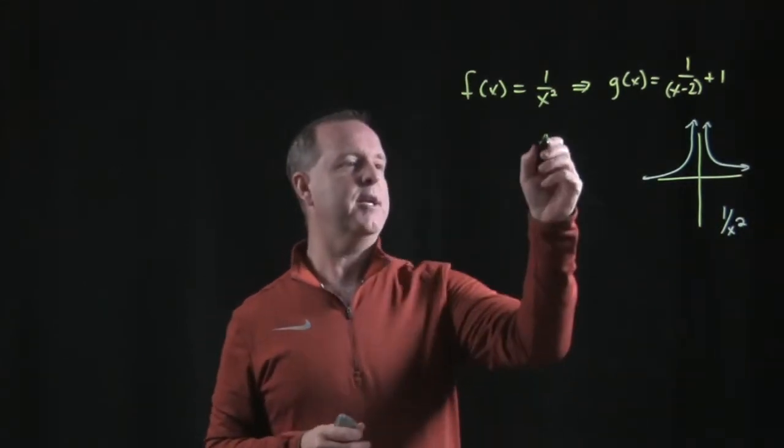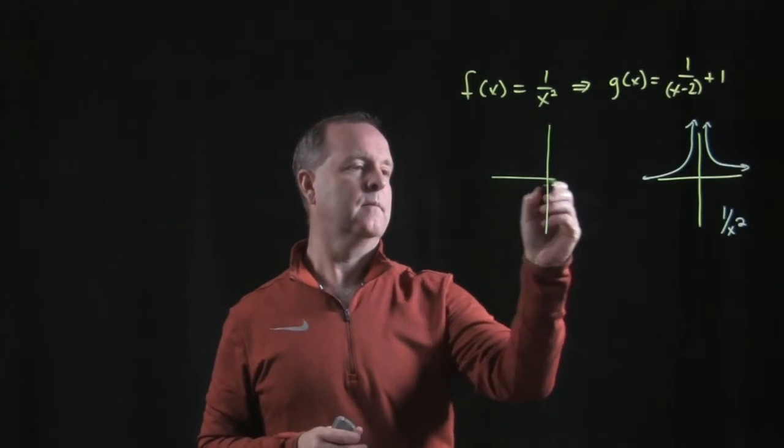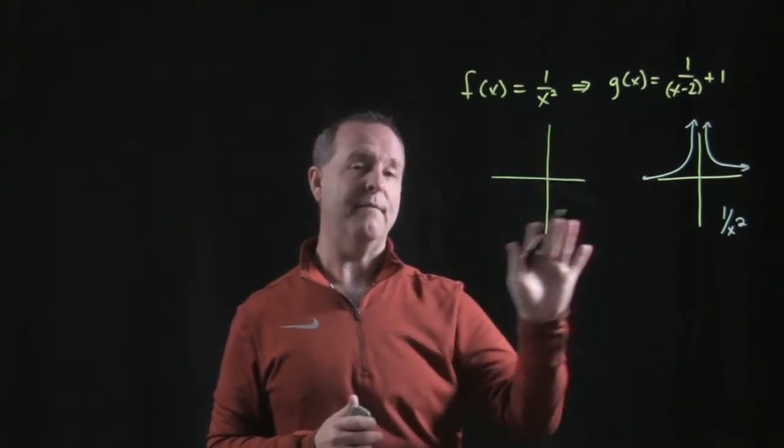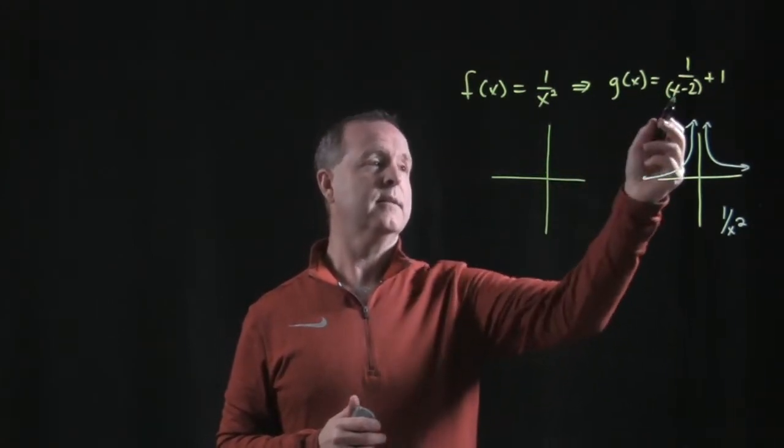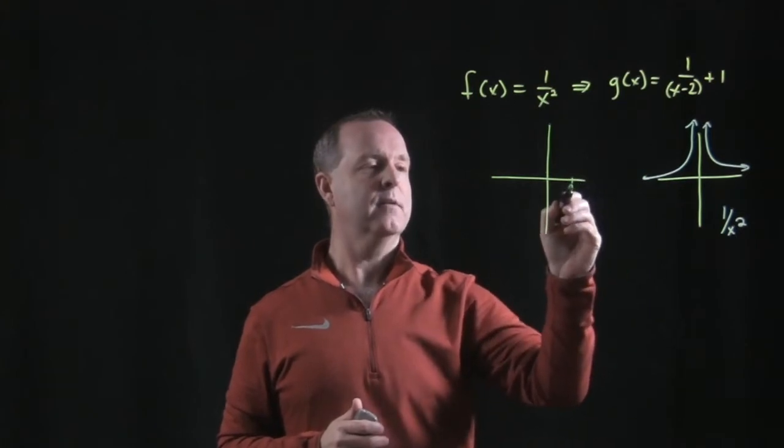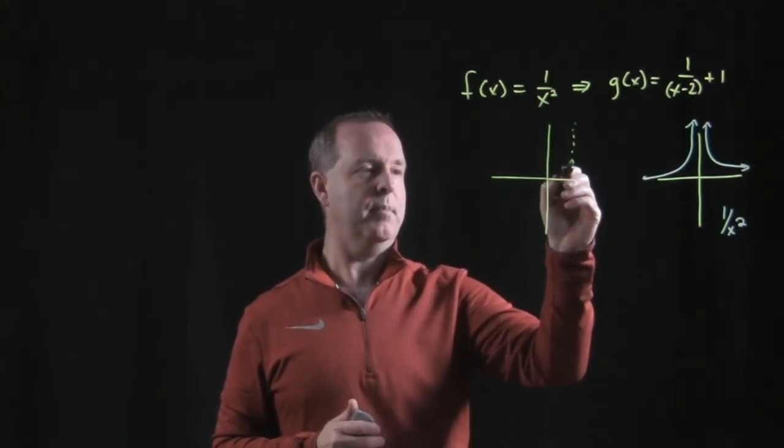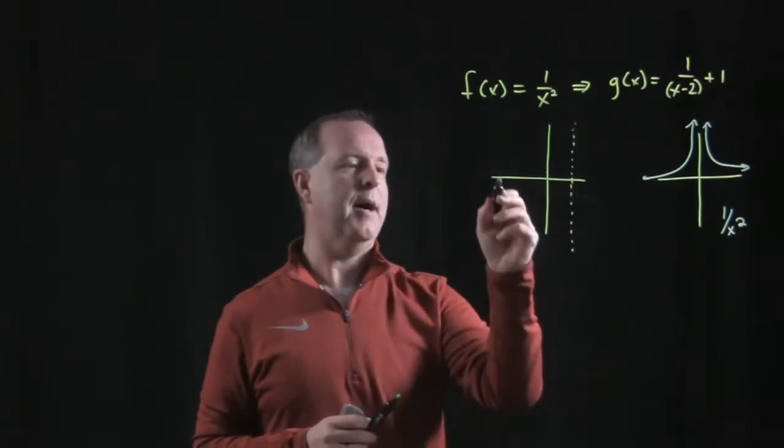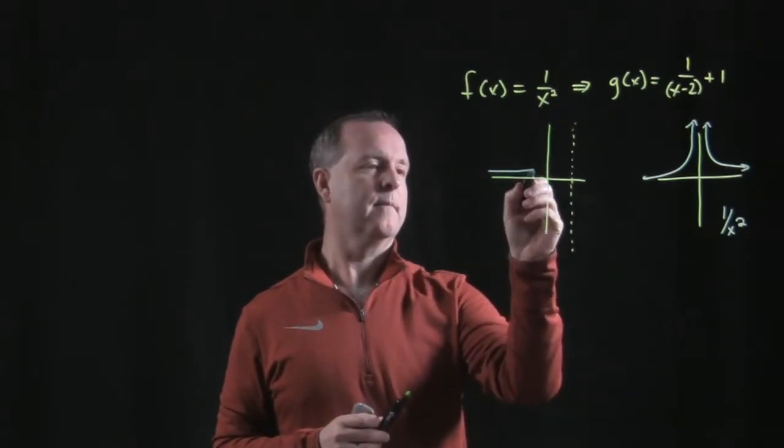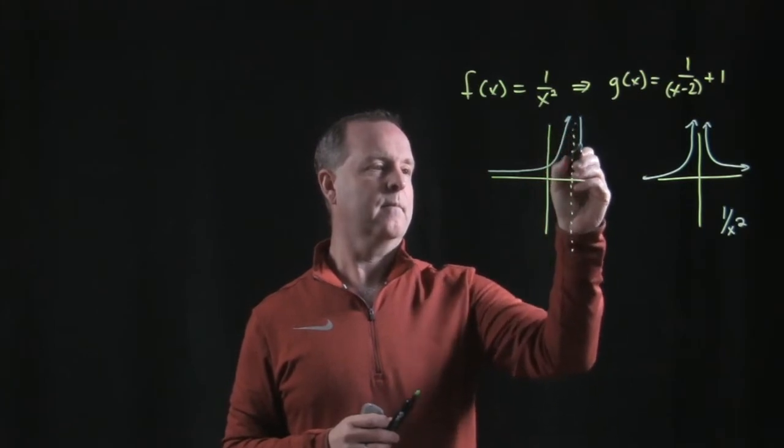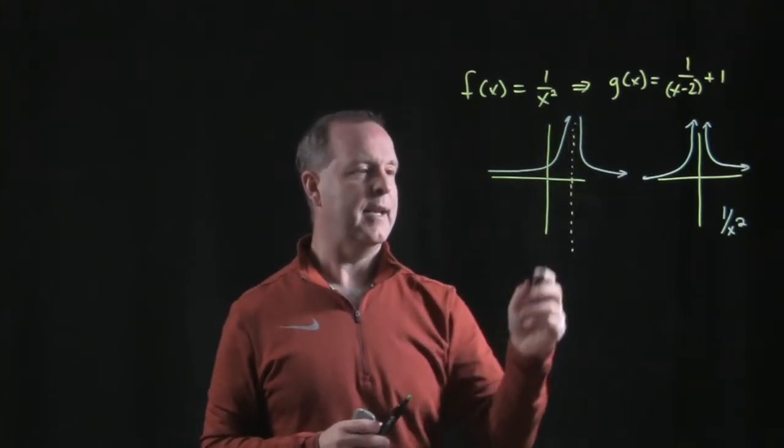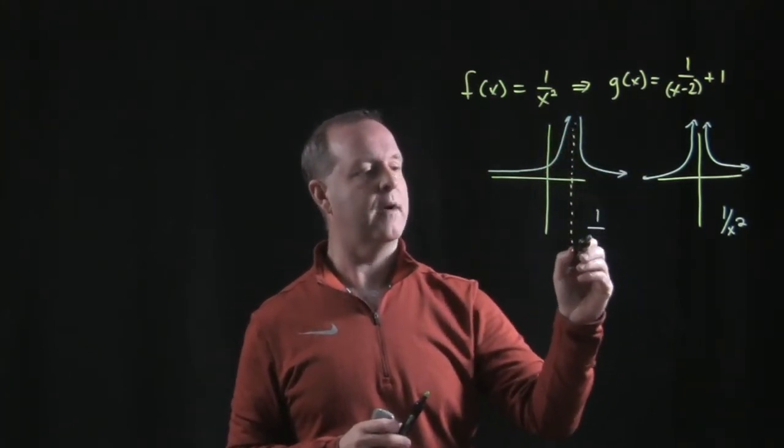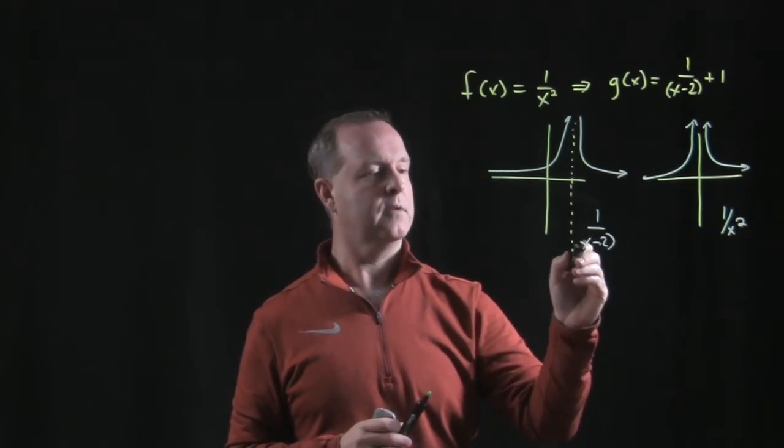Okay, let's do our next transformation. We're going to shift the entire graph over two spots to the right. And you can see that at 2, I have a vertical asymptote. The entire graph is going to be shifted over two spots. And now this graph represents 1 over x minus 2 squared.